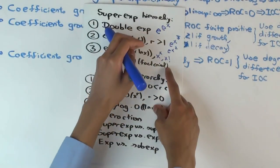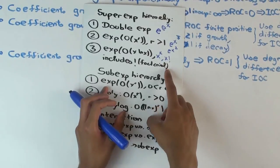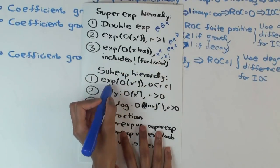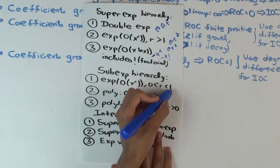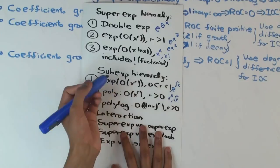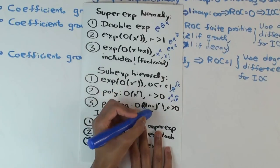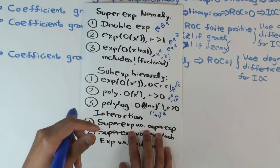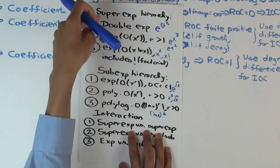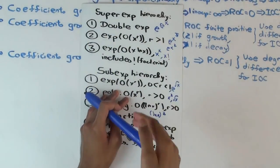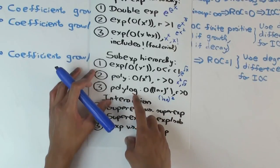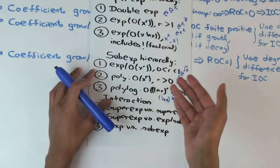Subexponential things grow slower than exponential. Examples include e to the square root of x, polynomials like x or x squared, and polylogarithmic functions like (ln x) squared. These form a hierarchy too: e to the square root x is faster than polynomial, which is faster than polylog. You can of course construct more things in the hierarchy — triple exponentials above double exponentials, or log of log below polylog. These are just the most common ones you'll encounter. Note that right now all these functions are functions of k, since we're figuring out how the coefficients grow as functions of k.